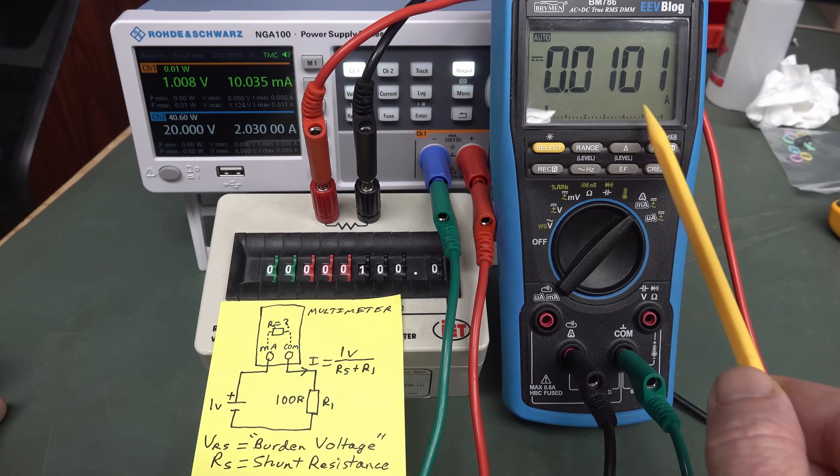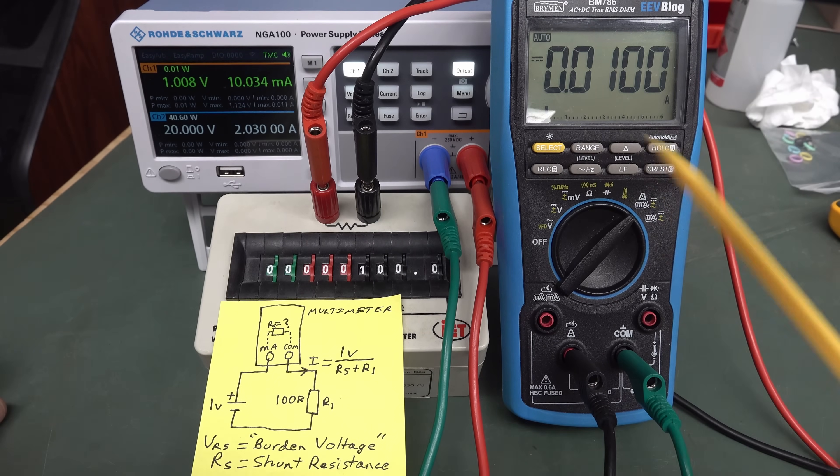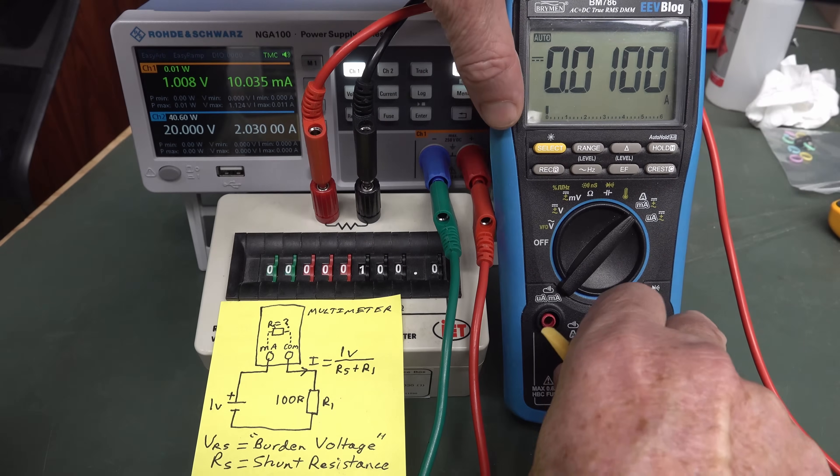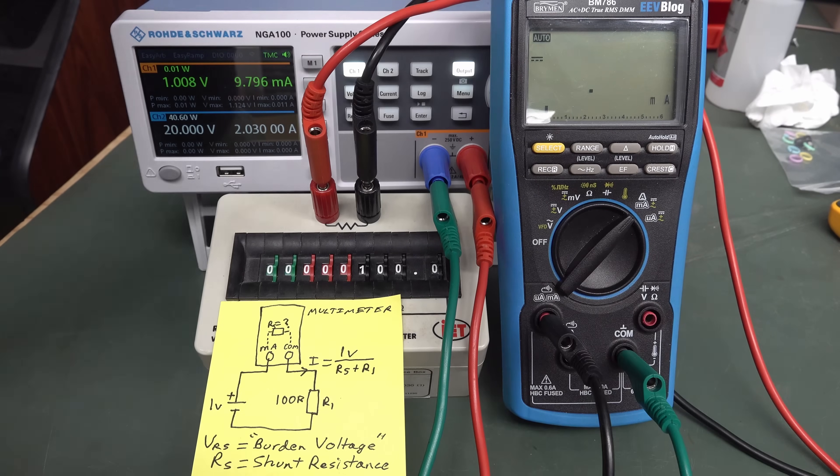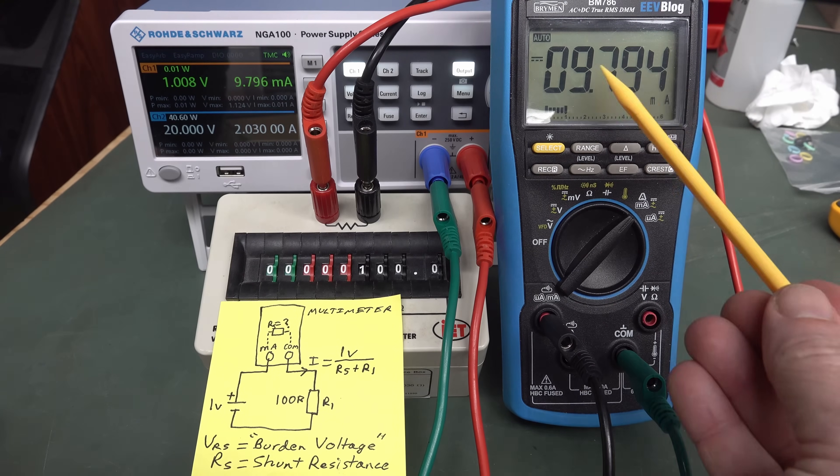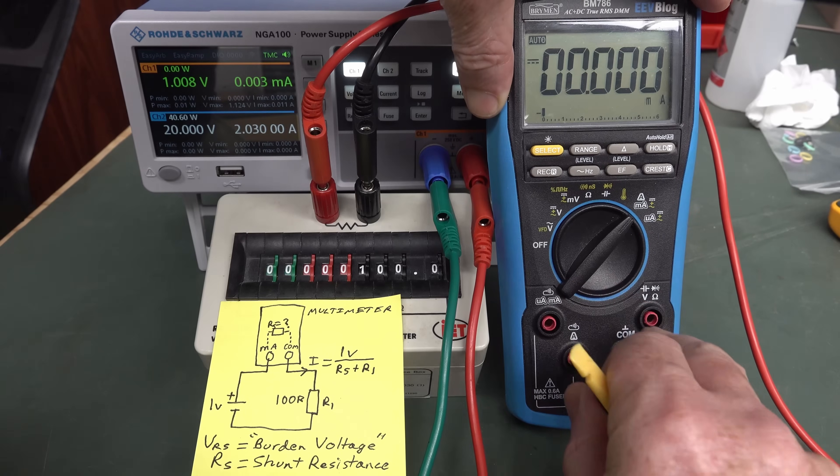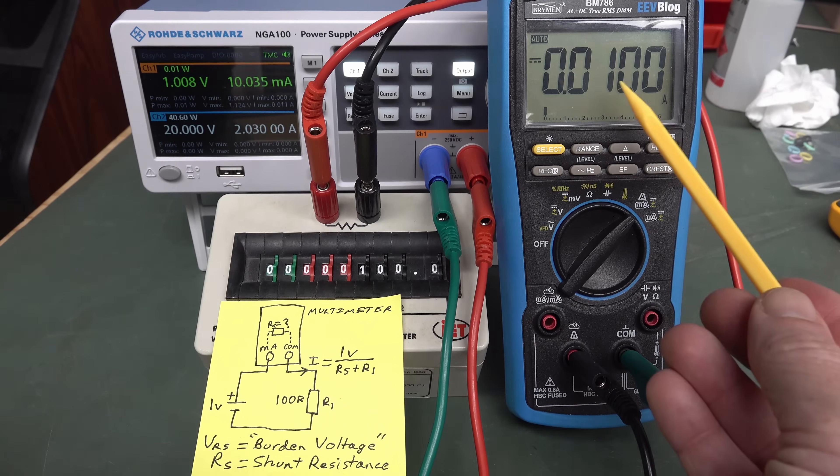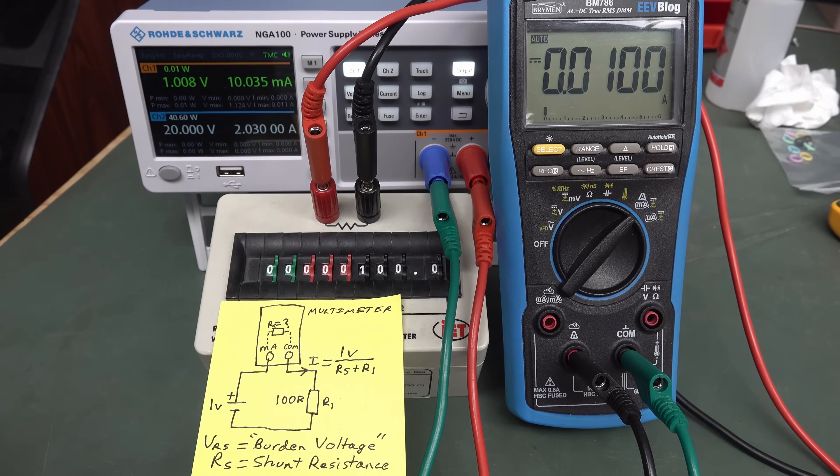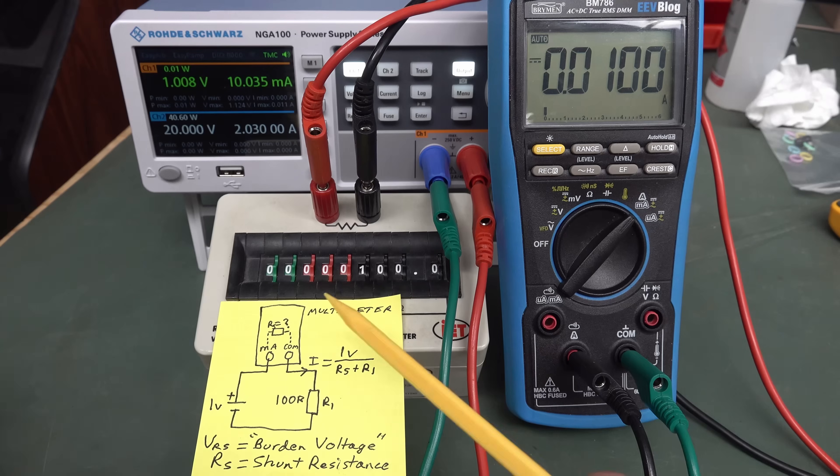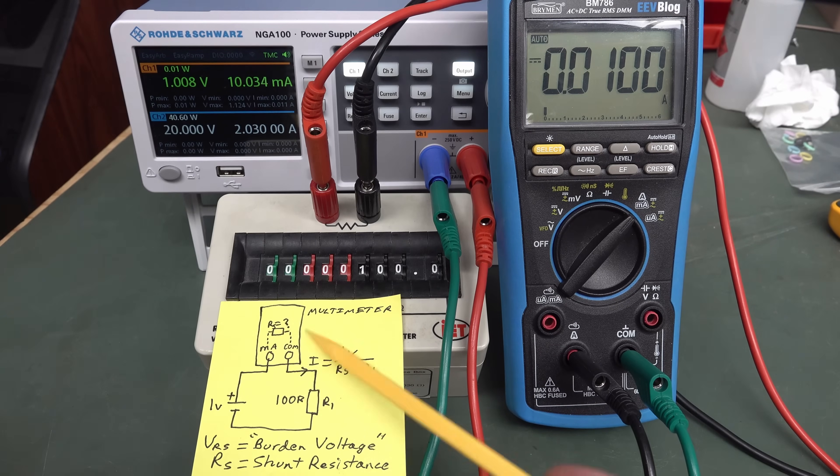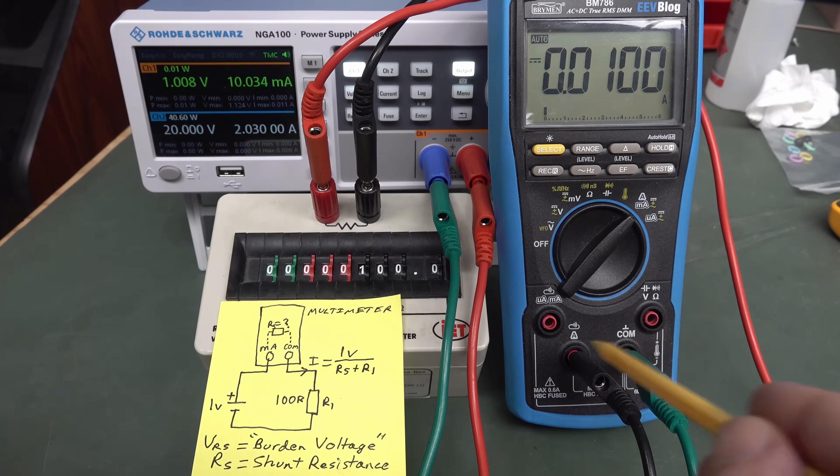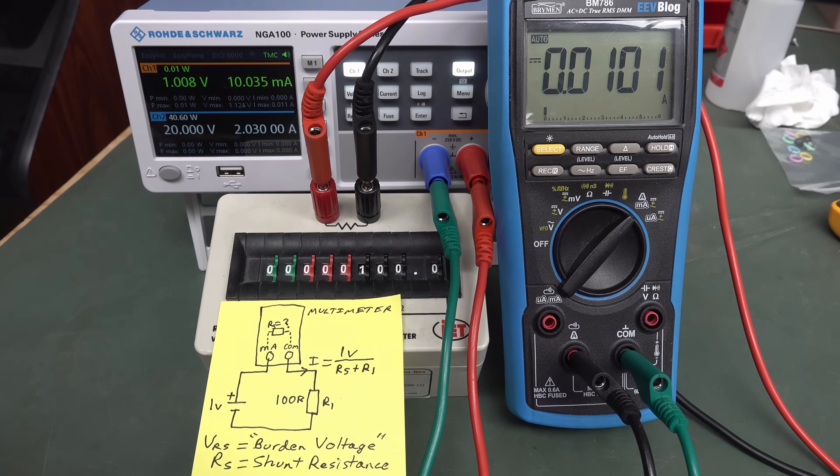But look, we've traded off our resolution here. We don't get as many digits as we got when we were actually using the milliamps. So go over to milliamps, you can see that we're actually getting three decimal places. Over here, we're only getting two, basically two decimal places after the milliamp range there. So we've lost some resolution, but we're now not impacting our circuit as much because this shunt resistor is much, much lower on the amps range. But it's not zero.